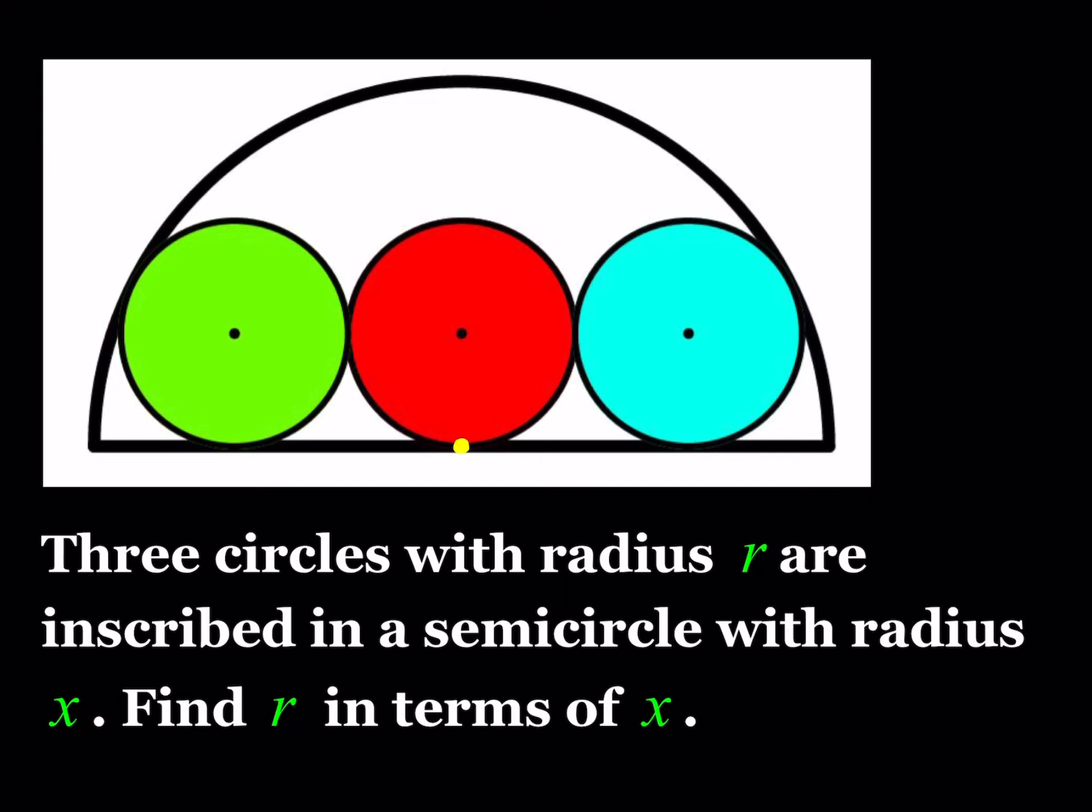As always, we're going to start by making some connections. I'm going to start at the center of the semicircle, and we'll make a connection to the center of the circle. What do we know about this length? That's the radius of the semicircle, which is x.